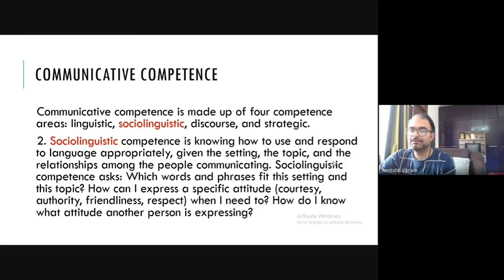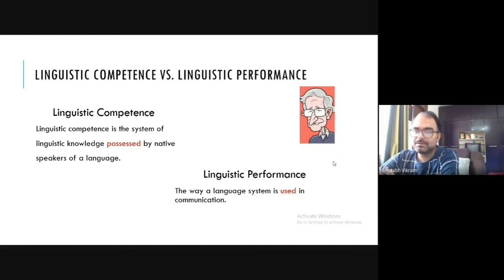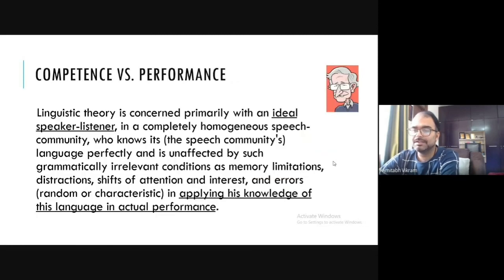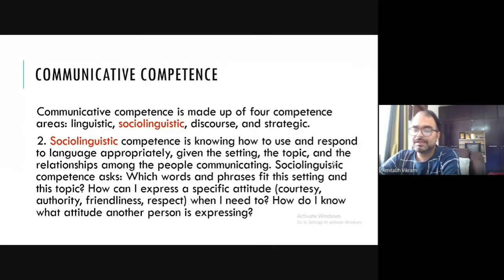So we have these four components under communicative competence: first is linguistic, second is sociolinguistic, third is discourse, and fourth is strategic. Communicative competence is quite different from Chomsky's linguistic competence and linguistic performance, because those concepts were given by Chomsky with a different connotation. In communicative competence, the linguistic part corresponds to Chomsky's system, while sociolinguistic, discourse, and strategic correspond to linguistic performance — because in those competences you need to use language.